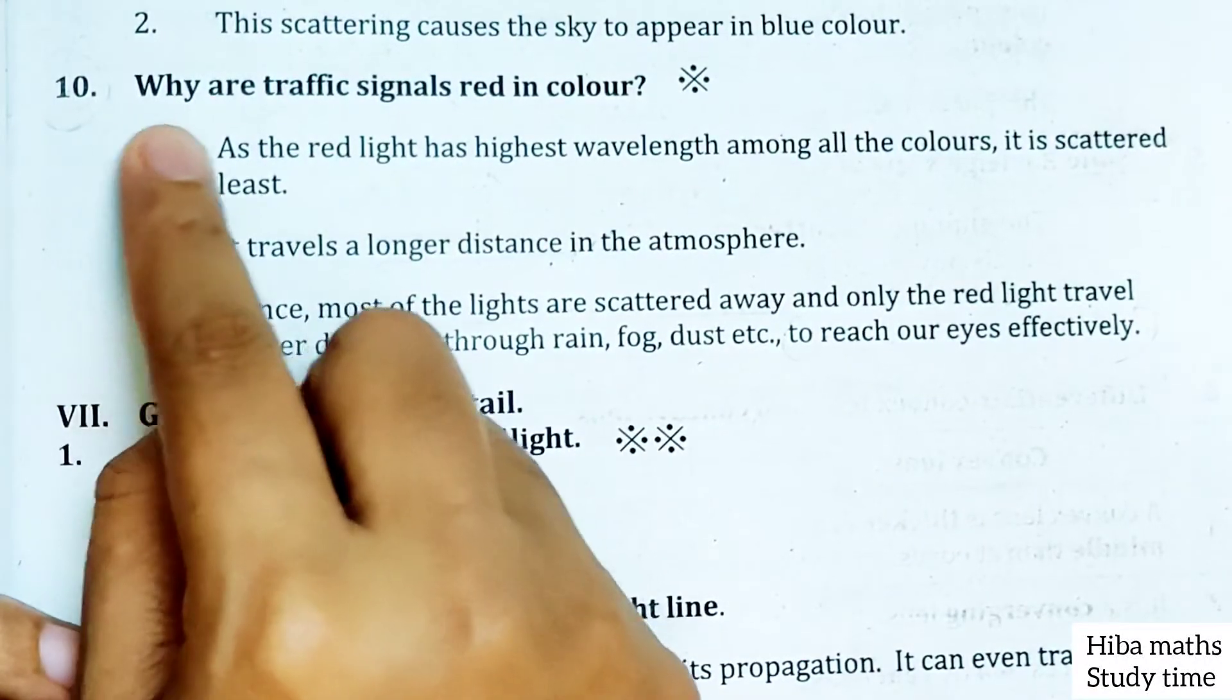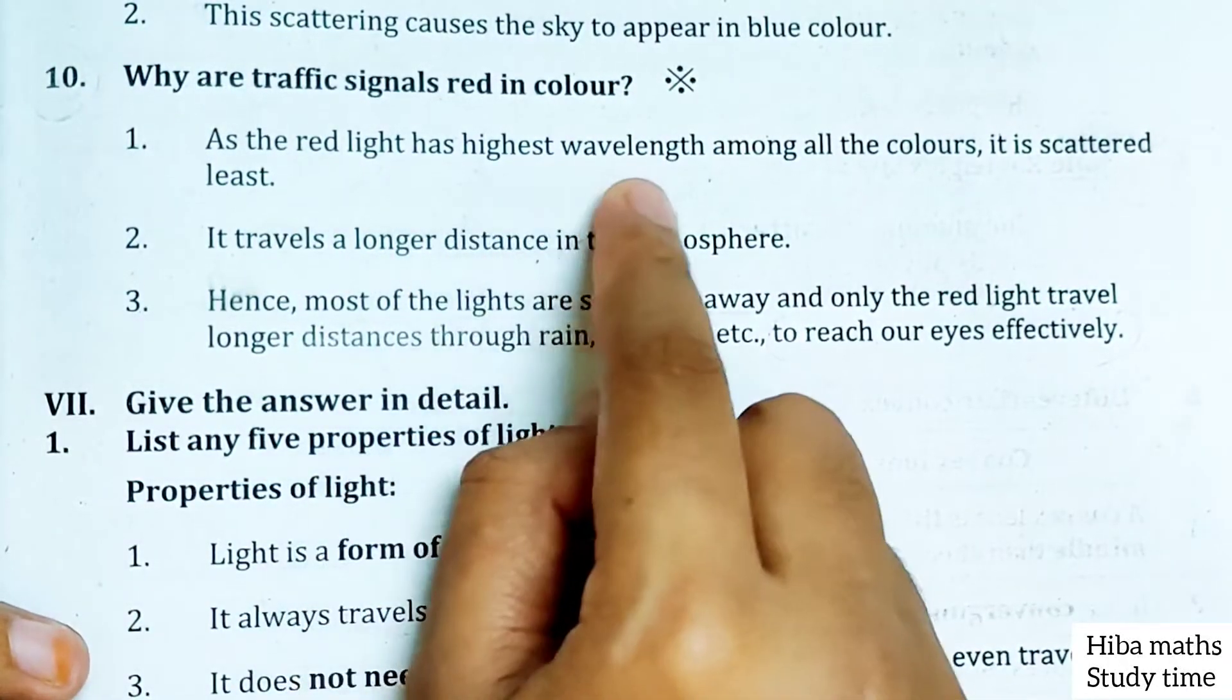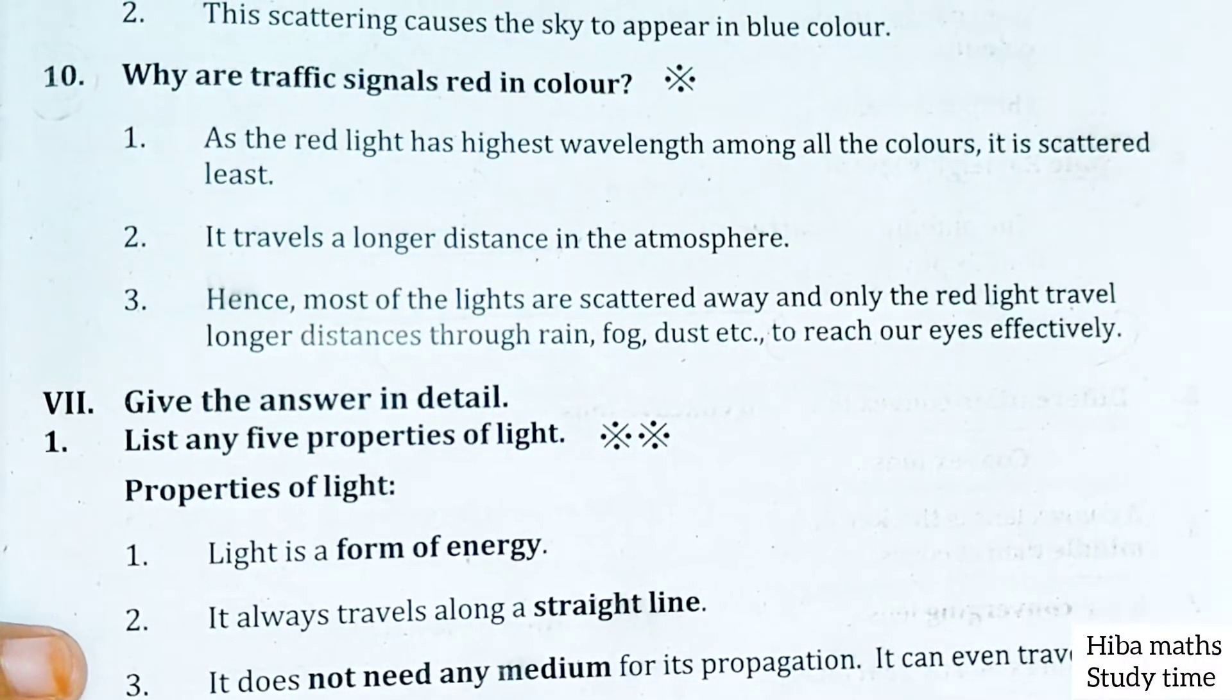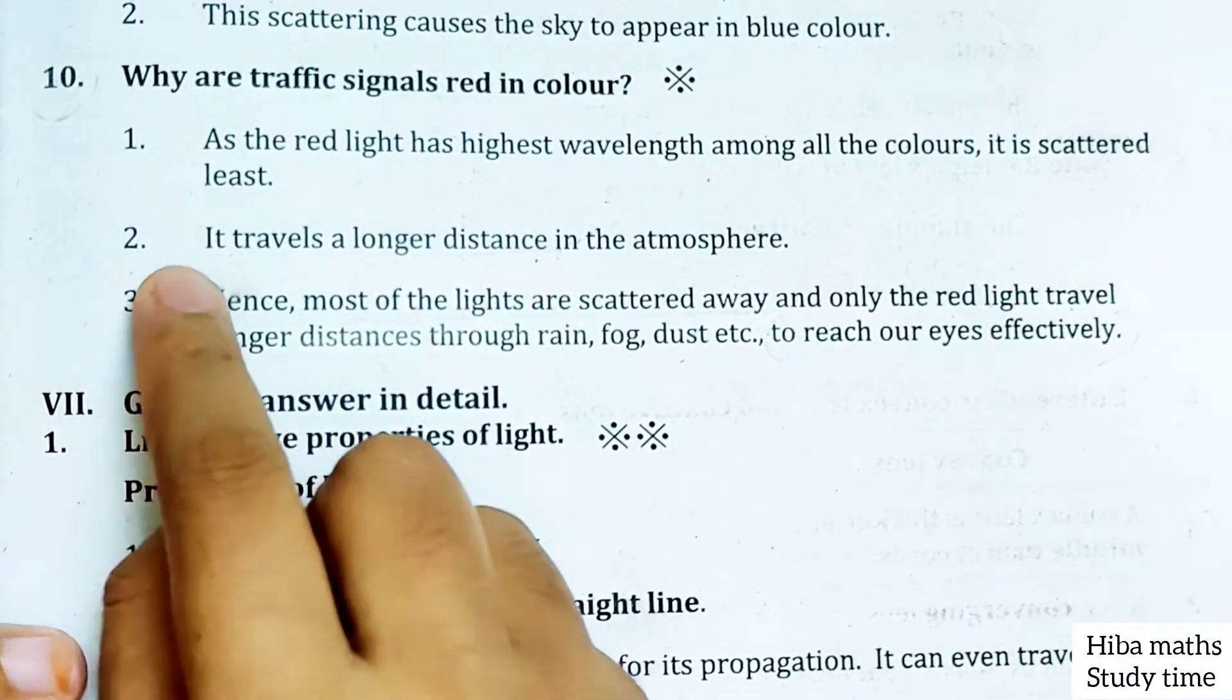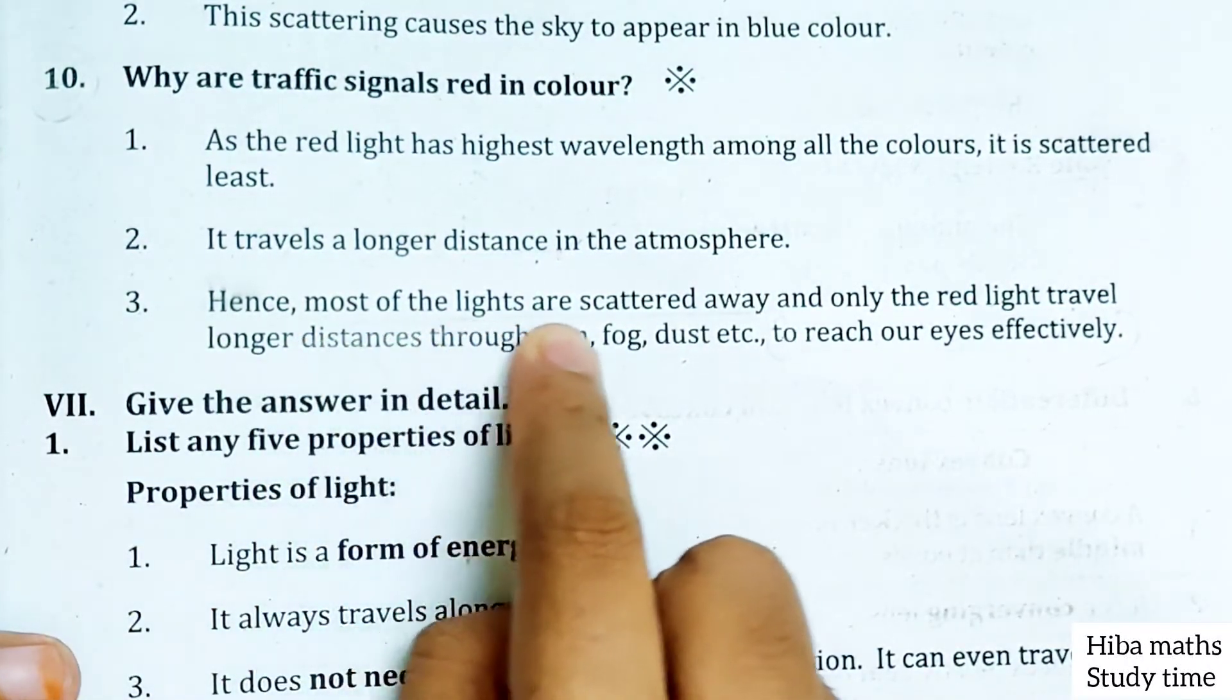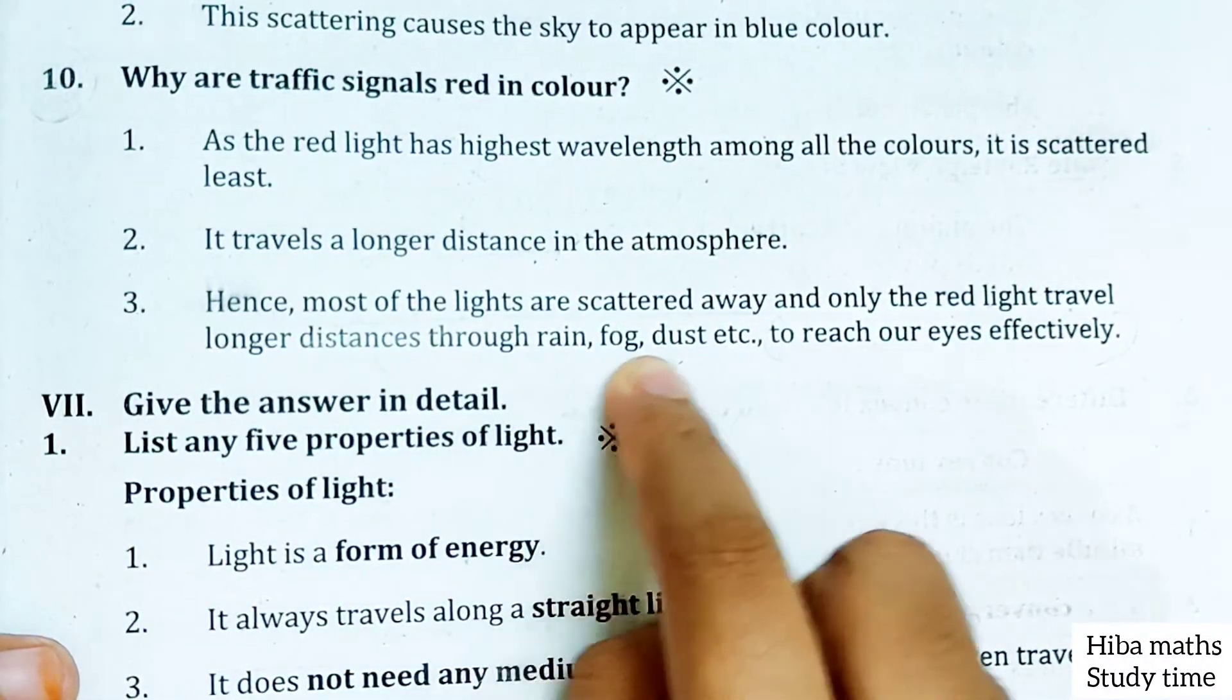Why are traffic signals red in color? As the red light has the highest wavelength among all colors, it is scattered least. It travels a longer distance in the atmosphere. Hence most of the lights are scattered away and only the red light travels longer distances through rain, fog, dust.